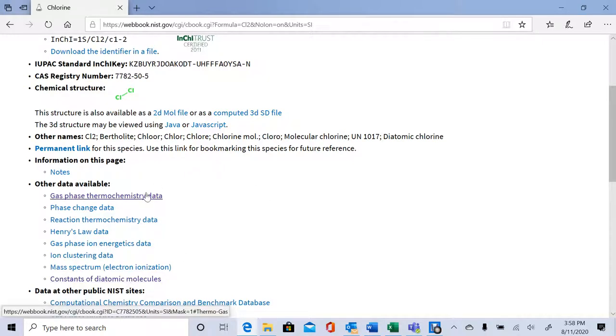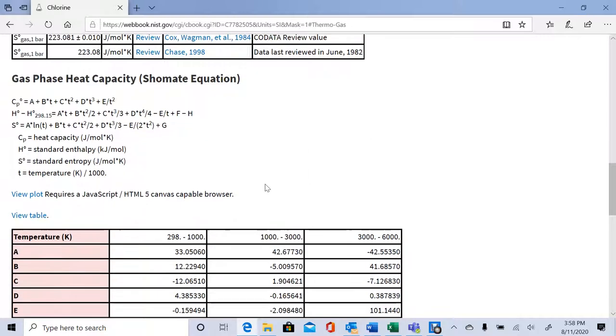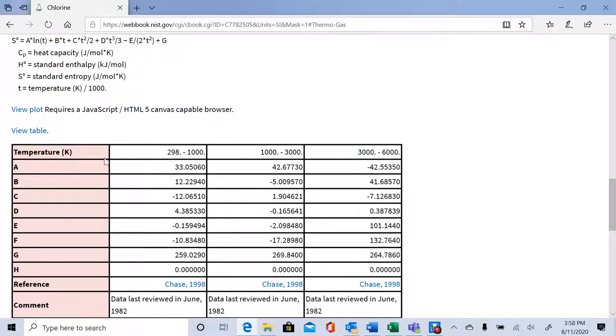Starting with the thermochemistry data, the first value we see is a literature value for the molar entropy. We can also find heat capacity on this page, but it's a bit more tricky. There's a table of constants A, B, C, D, E, F, G, and H